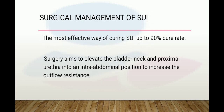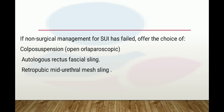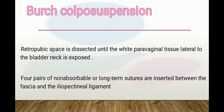Surgical management is the most effective way of curing stress urinary incontinence, with up to a 90% cure rate. Surgery aims to elevate the bladder neck and proximal urethra into an intra-abdominal position to increase outflow resistance. If non-surgical management has failed, offer the choice of: Burch colposuspension (open or laparoscopic), autologous rectus fascial sling, or retropubic mid-urethral mesh sling.